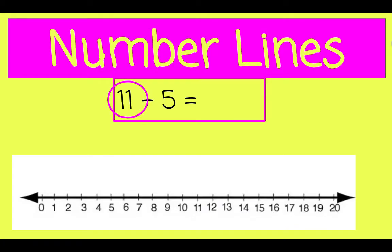11 plus 5. Let's start at 11 and take 5 jumps. There's 1 jump, 2, 3, 4, 5. We landed on 16 after 5 jumps, so 16 is our answer.